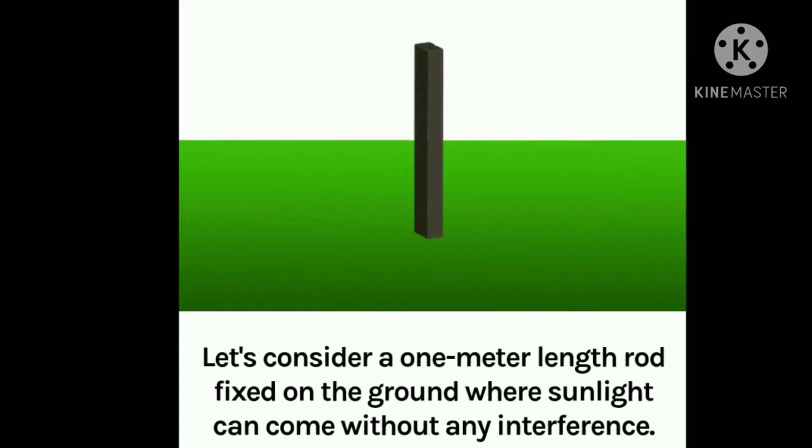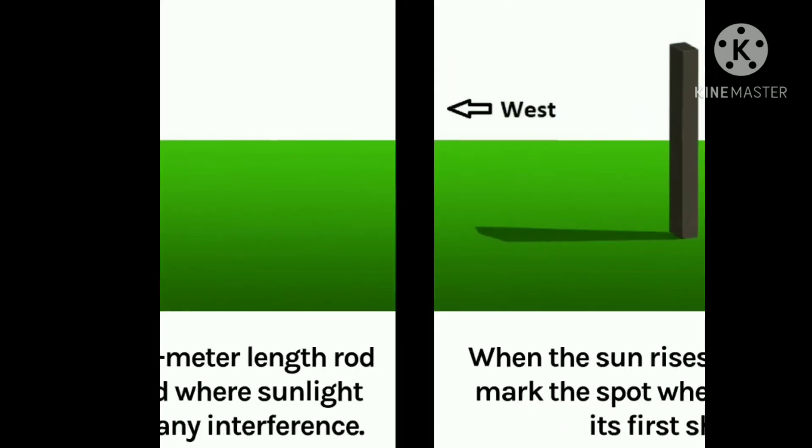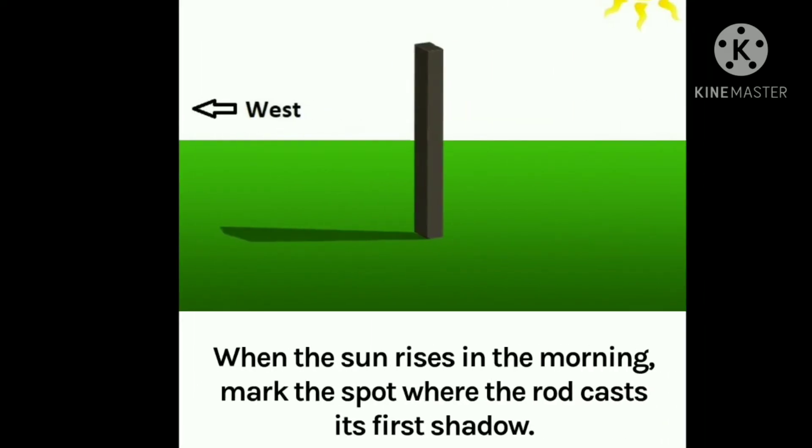So let us consider a 1 meter length rod fixed on the ground where sunlight can come from any entrance. When the sun rises in the morning, mark the spot where the rod casts its first shadow.